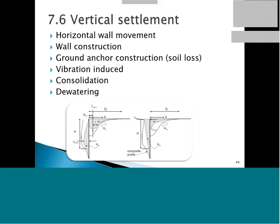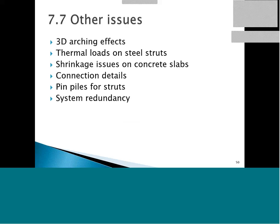We always have to look into vertical settlements. We can relate them to horizontal wall movement, wall construction, ground anchors, vibrations, consolidation, or dewatering. Even an 8-meter excavation with soft sands can cause considerable settlement behind — 10 meters behind on a historic church. Be careful about dewatering. Other things to look at include 3D arching effects, thermal loads on steel struts, shrinkage on concrete slabs, and connection details. Connection details and king piles were some of the reasons the Nicoll Highway failure took place. Make sure your system is redundant — just in case an excavator knocks off a strut or something else goes wrong.